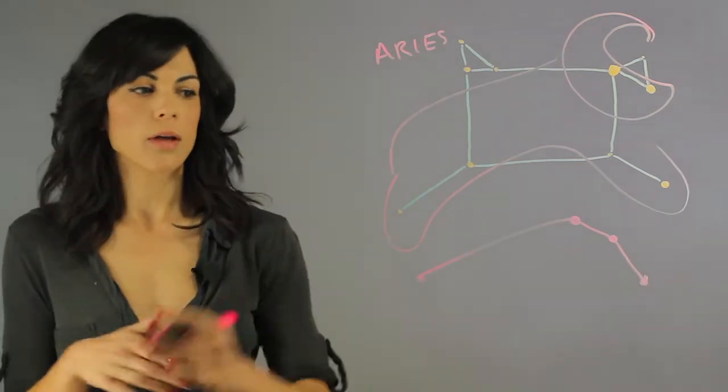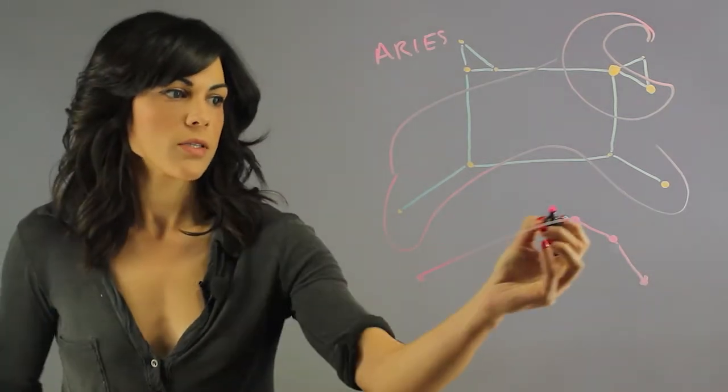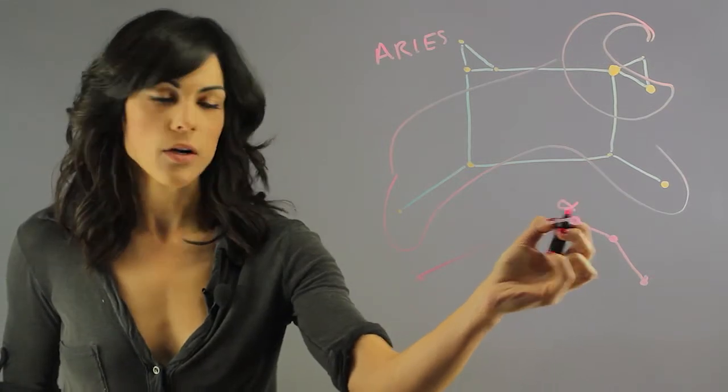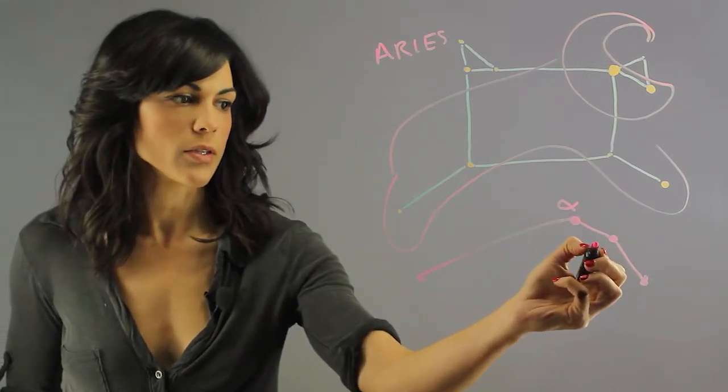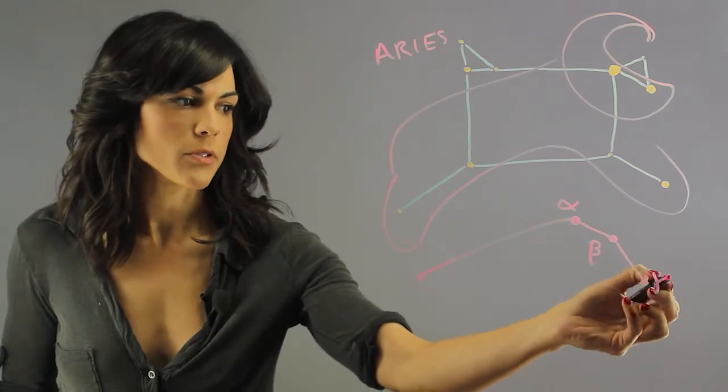You'll see these four stars. This is the alpha star of the constellation, this is the beta star, and this is the gamma star.